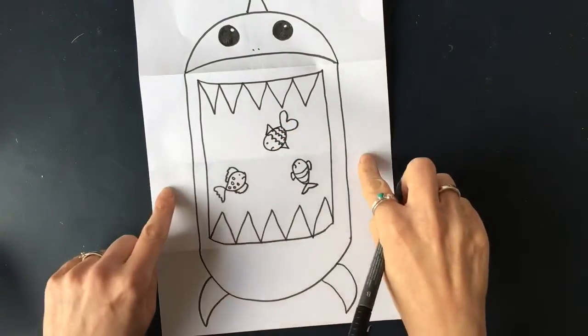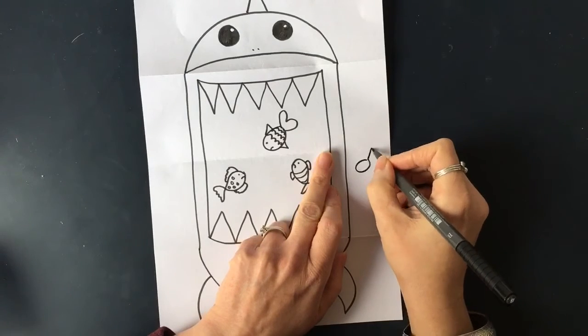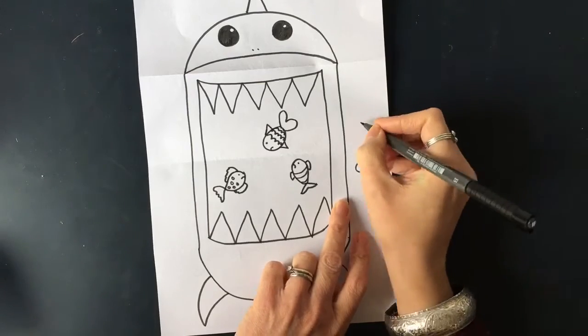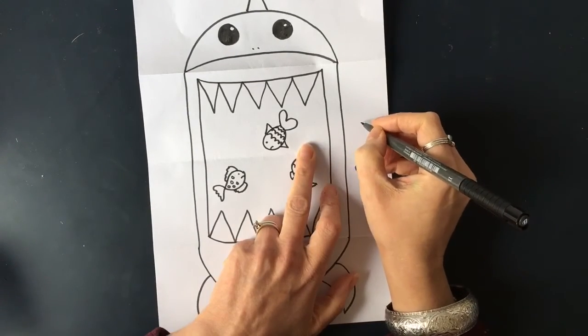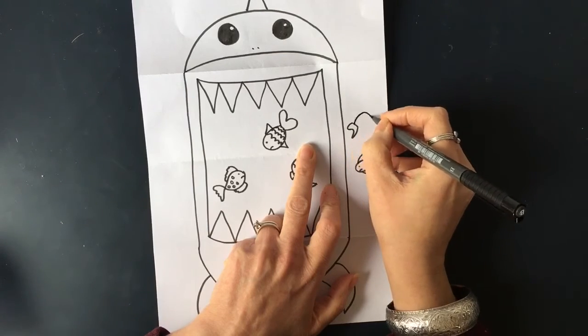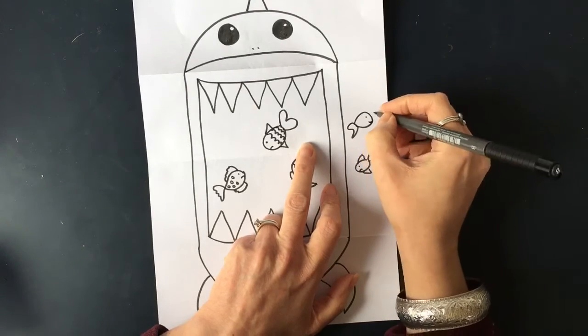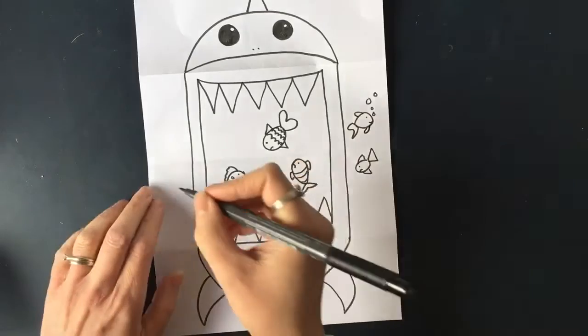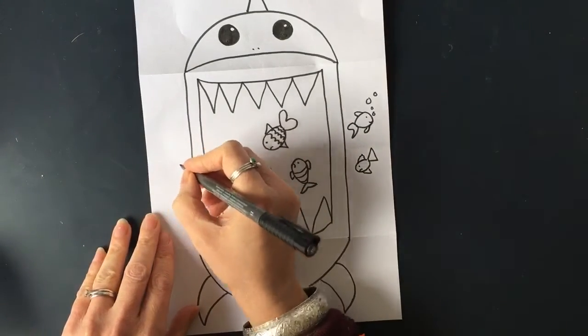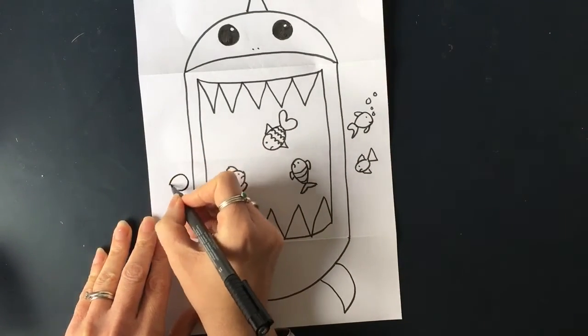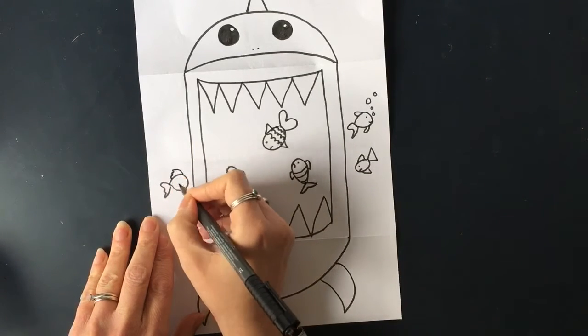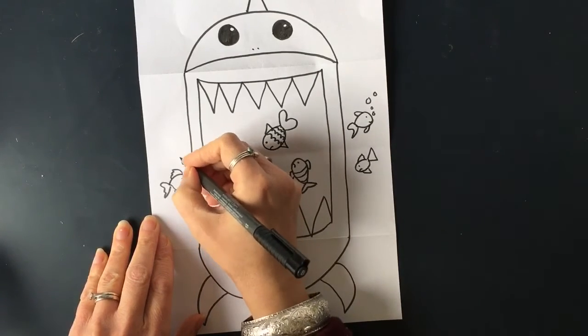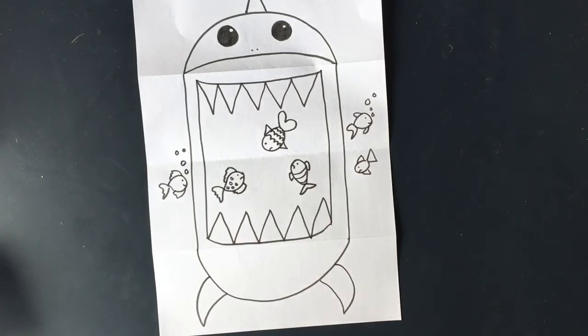Right, I might also do a couple of fish here. Look like they're either swimming towards the mouth or perhaps escaping it. And maybe do one trying to swim away from the mouth. Do some bubbles. Give them a fin. Shall we do one on this side as well? Let's have it going towards the mouth accidentally. There we go. And let's put some bubbles on this one as well. Right, I'm happy with that.